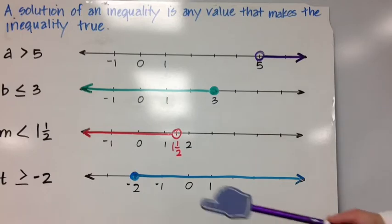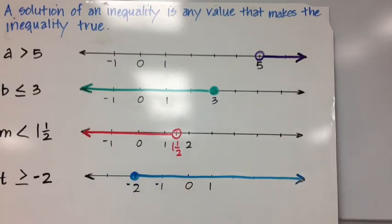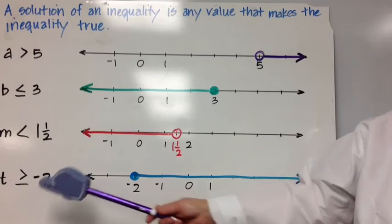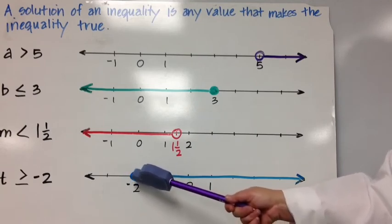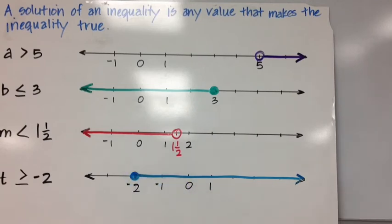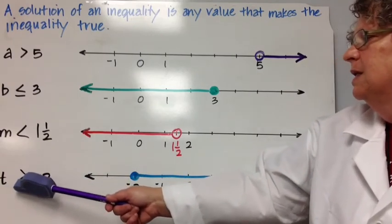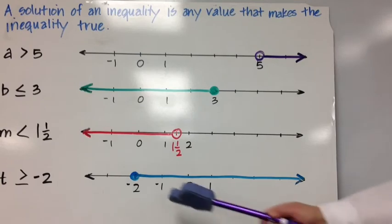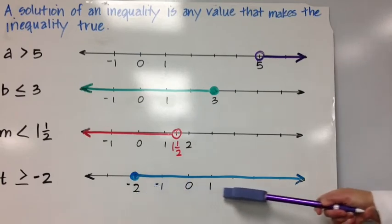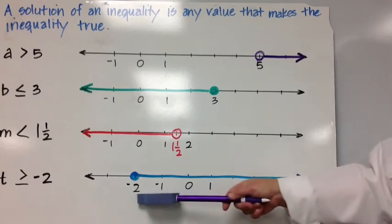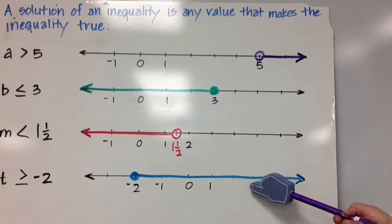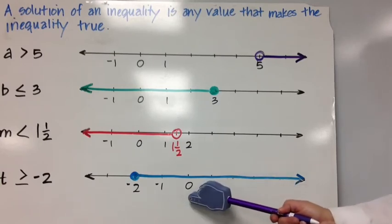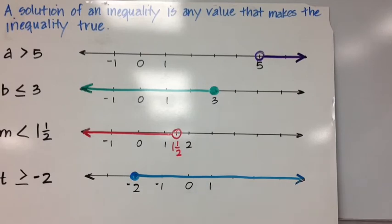T is greater than or equal to negative 2. Since we have greater than or equal to, negative 2 is part of our solution set. We start at negative 2 with a closed circle, because negative 2 is greater than or equal to negative 2. Everything larger — in the positive direction from negative 2 — is a solution. For example, 2 is greater than or equal to negative 2, and 0 is greater than or equal to negative 2.